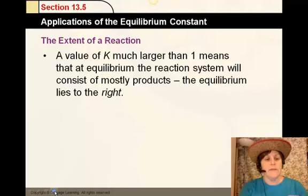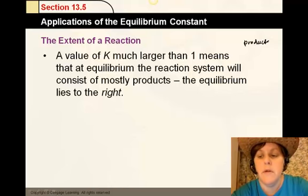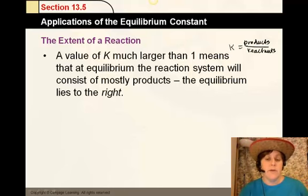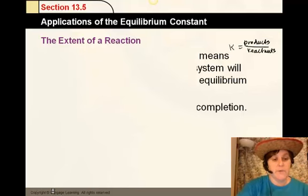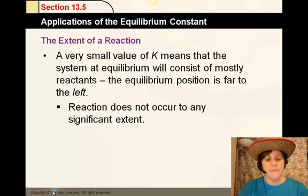The extent of a reaction. The value of K much larger than one means that equilibrium will lie to the right, mostly products, because if we have products divided by reactants equals K and their concentrations. If the value we get when we divide is greater than one, we have a lot of products. And that usually means that the reaction occurs and goes to completion 100%. A very small value of K means that the system is at equilibrium, but it consists mostly of reactants, and so the reaction lies to the left. And the reaction does not occur to any significant extent. Things that do not ionize well, like weak acids, do not ionize well, and therefore the equilibrium tends to lie to the left. This is an example of that.